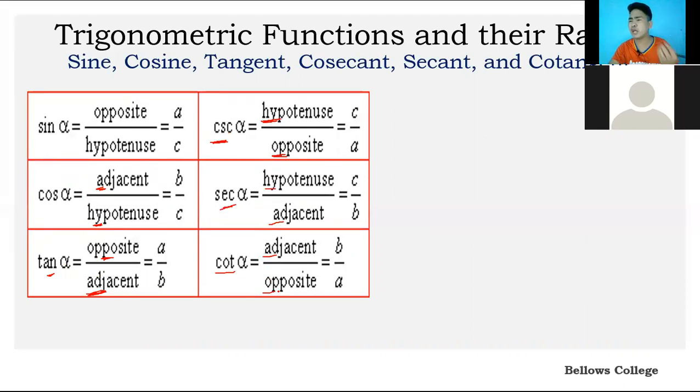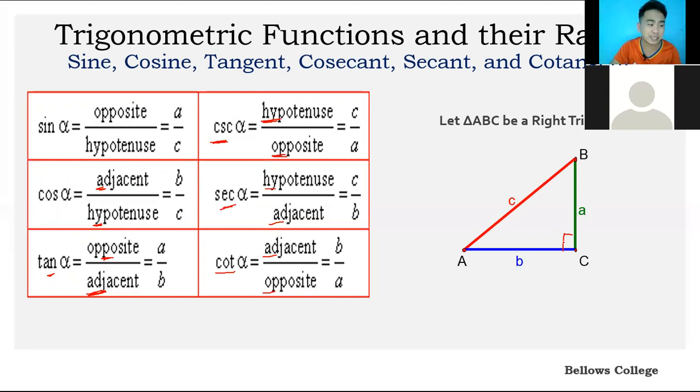Now how do we determine the hypotenuse, opposite, and adjacent of a right triangle? Suppose we have triangle ABC with a right angle at C. How do we identify which is opposite, adjacent, and hypotenuse? The hypotenuse doesn't change—it's the longest side of the right triangle and the side opposite the 90-degree angle. Automatically, the red part is our hypotenuse.